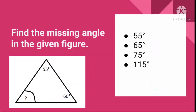Question number 12: Find the missing angle in the given figure. A triangle is given with two angles of 55 degrees and 60 degrees — you have to find the third angle. Your options are 55 degrees, 65 degrees, 75 degrees, or 115 degrees. Solve this question in your notebook and find the correct answer.